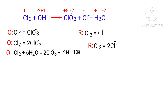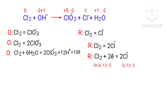Now you can equalize the addition of charges in the reduction half reaction. Both sides are not equal. To make them equal you should add 2 electrons to the left side to make it equal to minus 2. Now the addition of charges are equalized in the reduction half reaction.